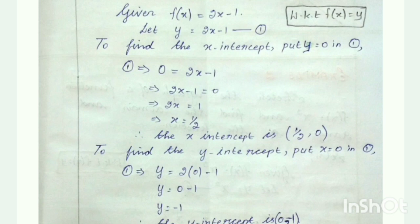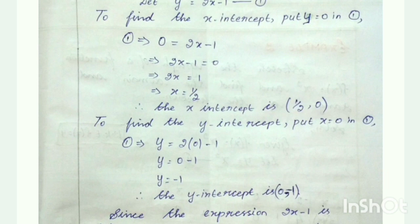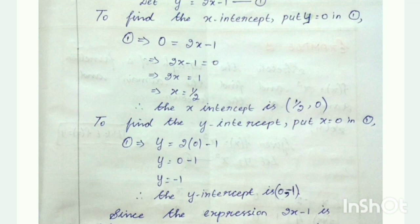To find the x-intercept, using equation number 1, substitute y equal to 0. So putting 0 in place of y: 0 is equal to 2x minus 1. Then, doing side change: 2x minus 1 equal to 0. Moving minus 1 to the right side, it becomes positive 1. So 2x equal to 1. Then moving 2 to the right side as denominator: x equal to 1 by 2. So the x-intercept value is (1/2, 0).